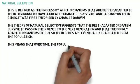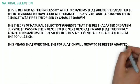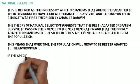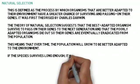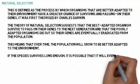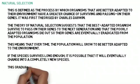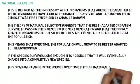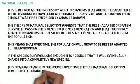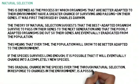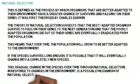This means that over time, the population will grow to be better adapted to the environment. If the species survives long enough, it is even possible that it will eventually change into a completely new species. This gradual change in the species over time through natural selection, in response to changes in the environment, is a possible mechanism of evolution.